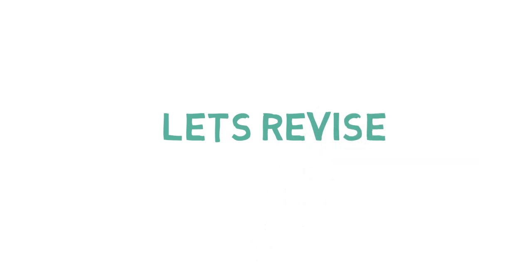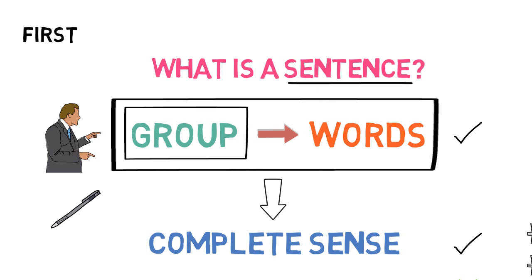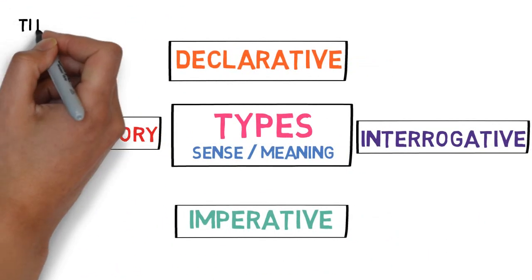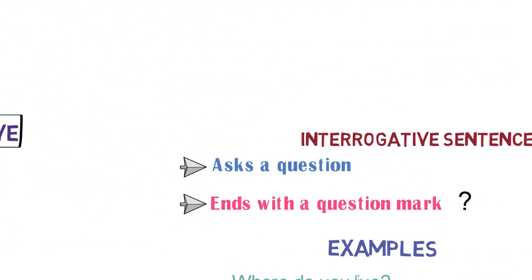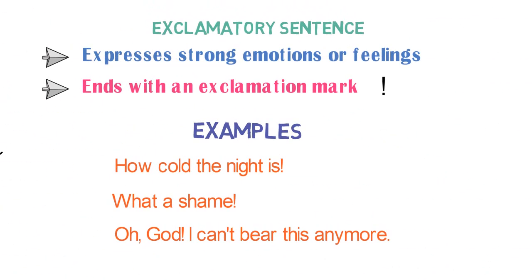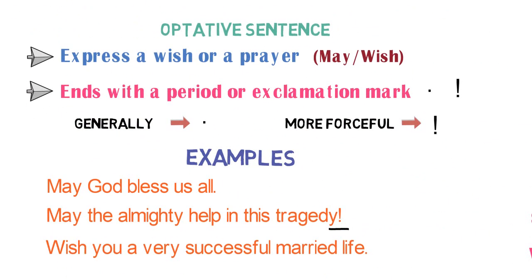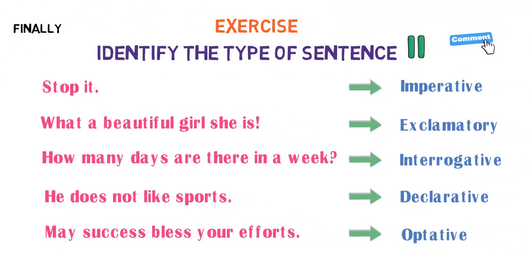Let's quickly revise what we learned in this video. First, we learned what is a sentence — a sentence is a group of words that makes complete sense or meaning. Then, we learned the types of sentences with examples. Based on the sense or meaning, sentences are divided into four types: declarative, interrogative, imperative, and exclamatory. We also learned a new type of sentence called the optative sentence. Finally, we validated our learning with an exercise.